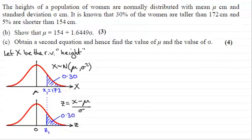So that means then that, if we just come down here, we know that Z₁ is equal to the observed value, using this result here, which is 172, minus the mean, which is μ, divided by the standard deviation, σ.